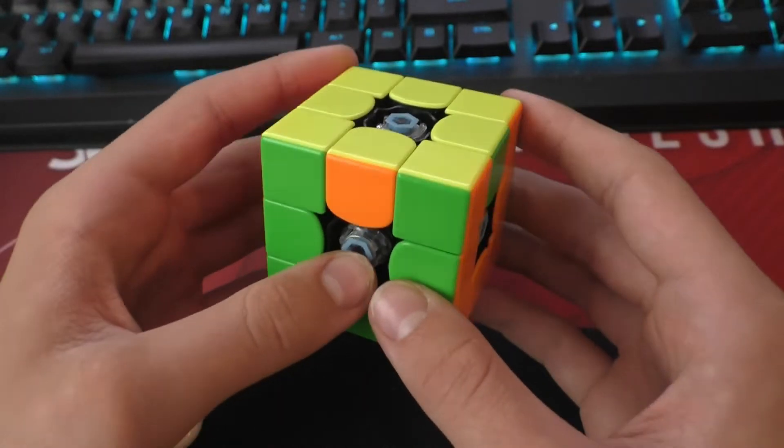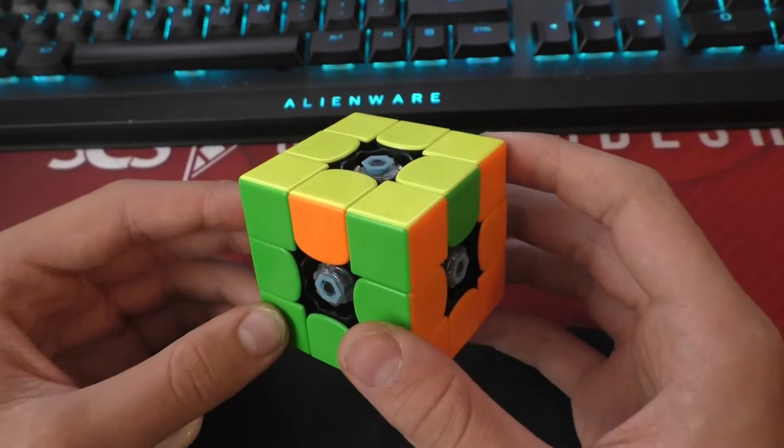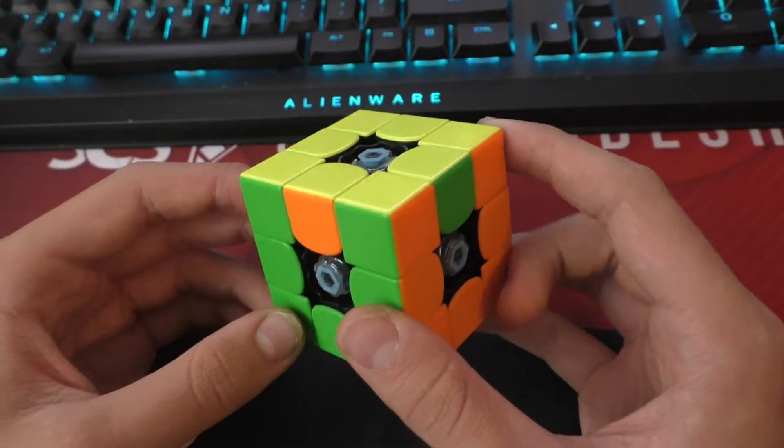So how come you can get parity in a void cube but not a regular 3x3? Well, I'm going to take a look at why this happens and how to fix it.